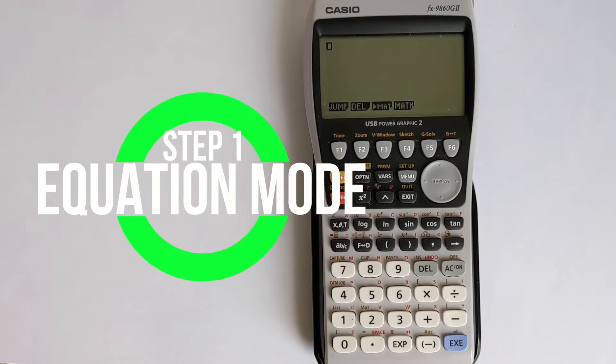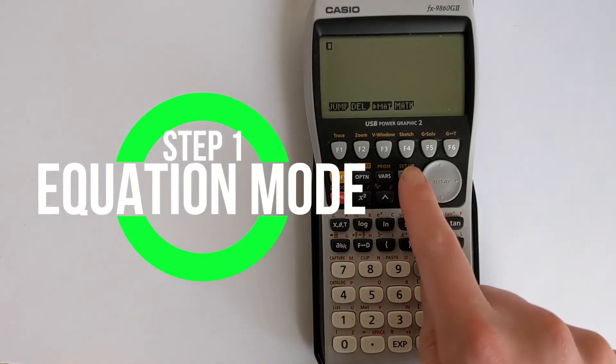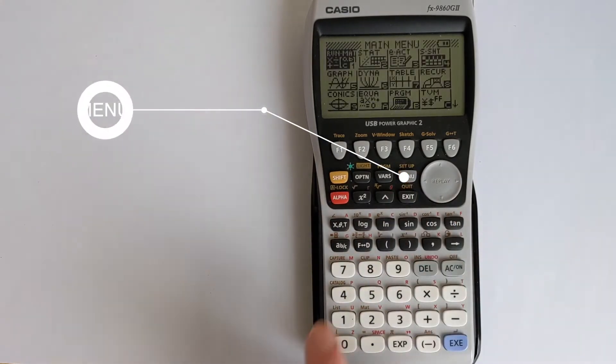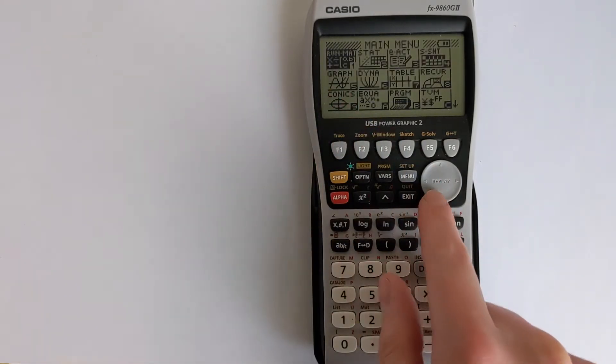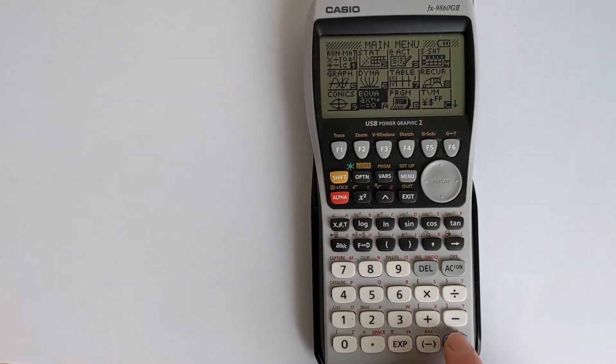Now the first step to solve this is to put the calculator into the correct mode. And to do this, we're going to press menu, and then we're going to navigate to where it says equation. So we go down and then choose option A.